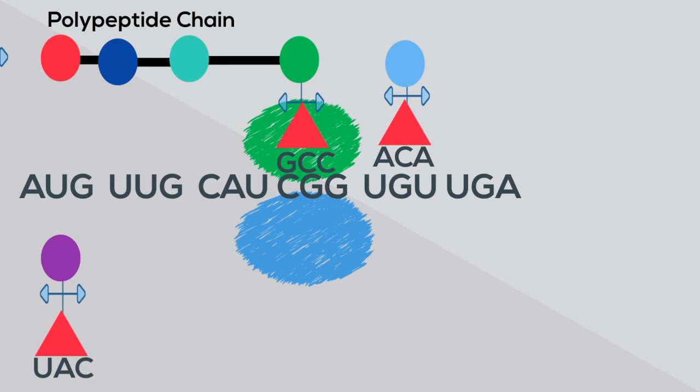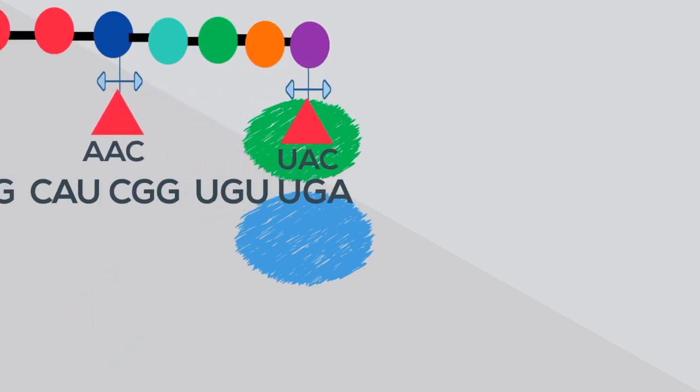This process will continue until a stop codon is read. In this example, the stop codon is UGA.